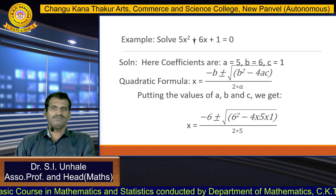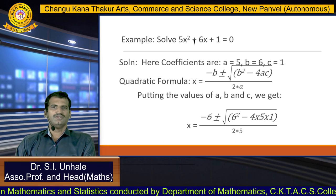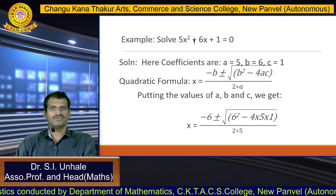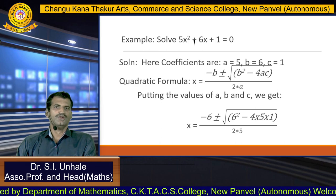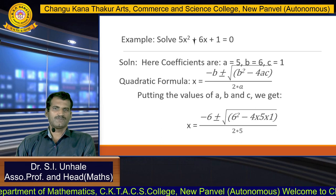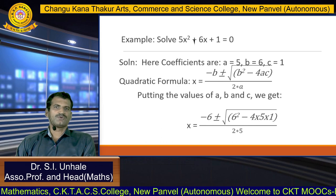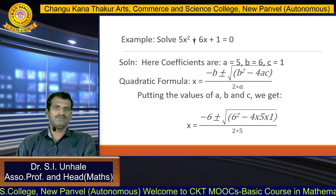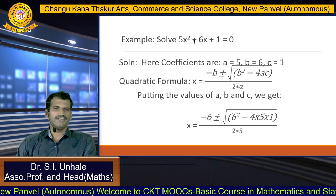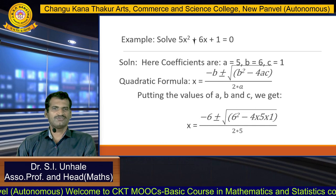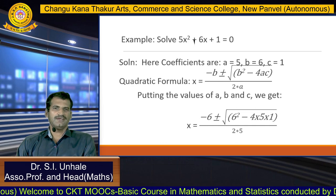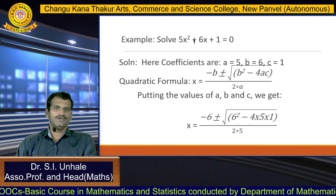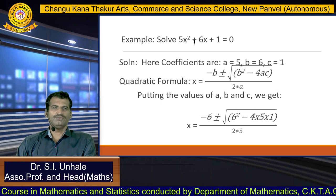We see one example: solve 5x² + 6x + 1 = 0. Comparing with the standard equation ax² + bx + c = 0, we get a = 5 (coefficient of x²), b = 6 (coefficient of x), and c = 1 (constant term). Putting these into the formula: x = (−6 ± √(6² − 4×5×1)) / (2×5).